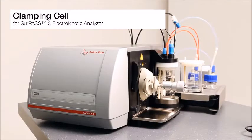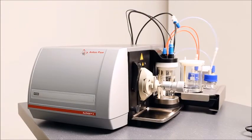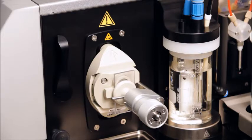This is the clamping cell for the SURPASS-3 electrokinetic analyzer. It's a measuring cell for analyzing flexible surfaces such as polymer foils or rigid samples such as semiconductor wafers. A great advantage of this cell is that it allows for a non-destructive analysis of your sample.